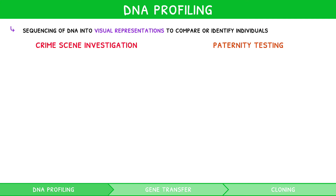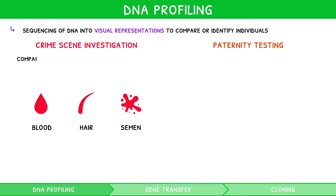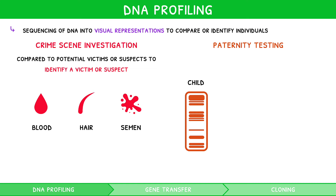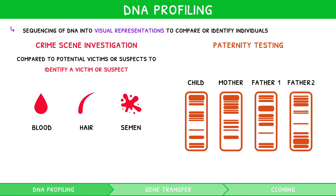In crime scene investigation, DNA profiling is conducted on bloodstains, hair, or semen and compared to potential victims, suspects, or the national database to identify a victim or suspect. In paternity testing, DNA profiling is conducted on a child, mother, and several potential fathers to identify the true father of the child.